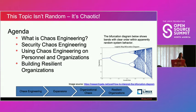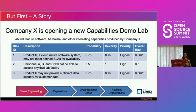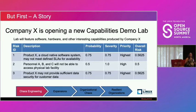I'll go briefly over what chaos engineering is, look at security chaos engineering quickly, and then get into the meat of it — using chaos engineering on your personnel and organizations. But first, a use case: Company X is opening a new capabilities demo lab featuring applications, software, hardware, and other capabilities. There's one system they really want to demonstrate: Product X, a phenomenal new software package developed through independent R&D.